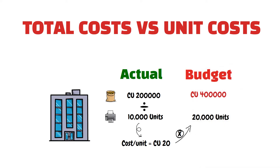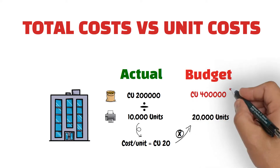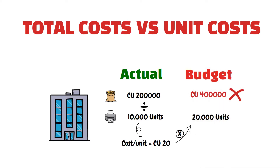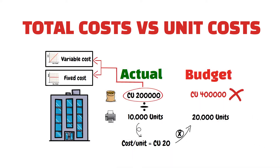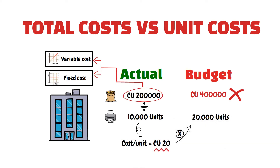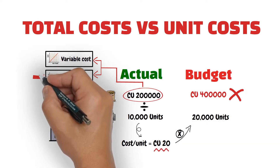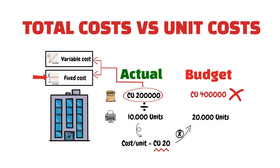Unfortunately, that is totally incorrect, because manufacturing costs include variable and fixed components, and the calculated unit cost here ignored the fact that fixed costs remain constant regardless of the change in the production level.